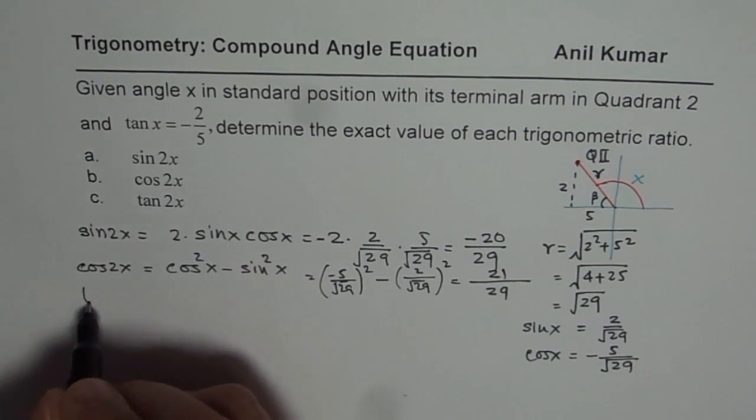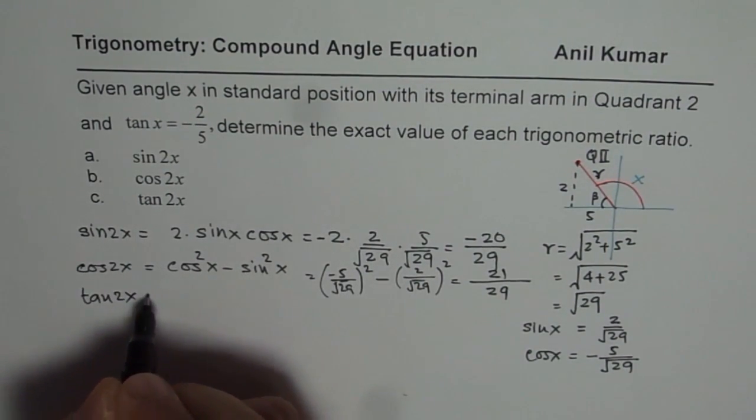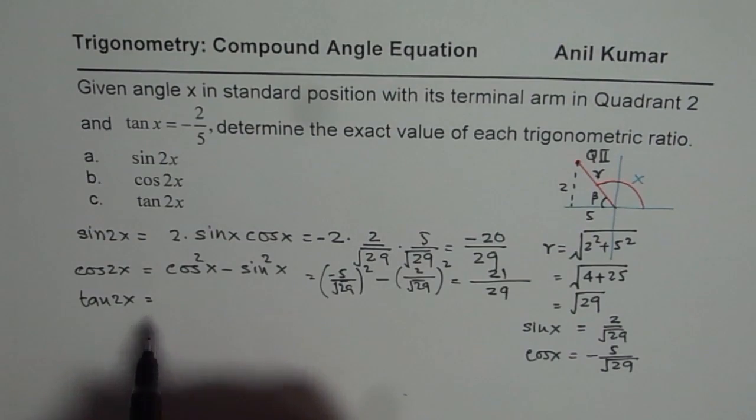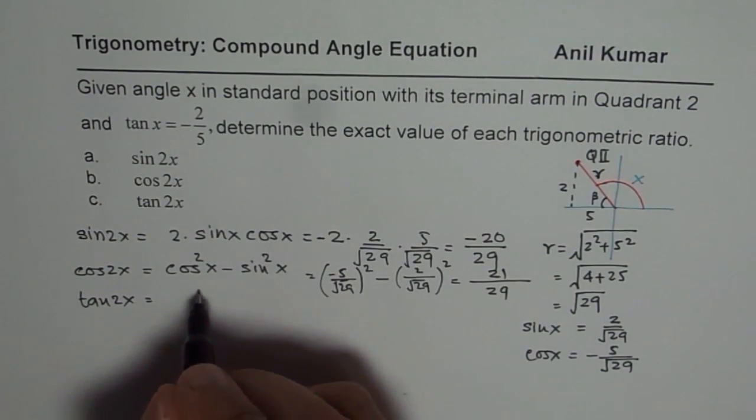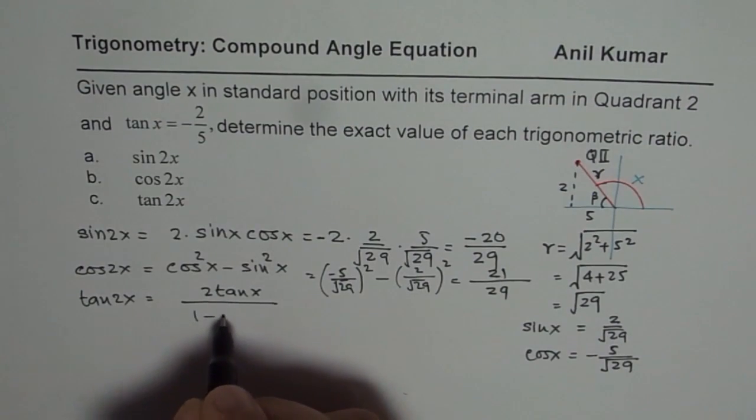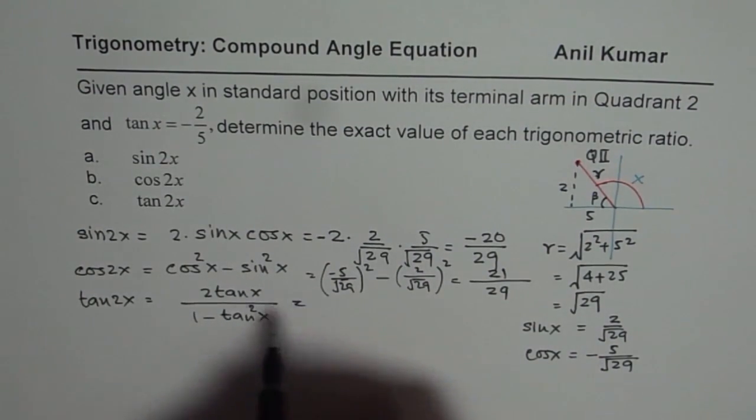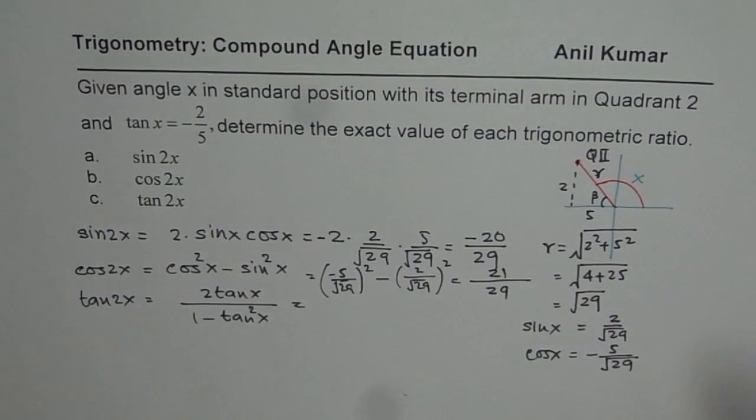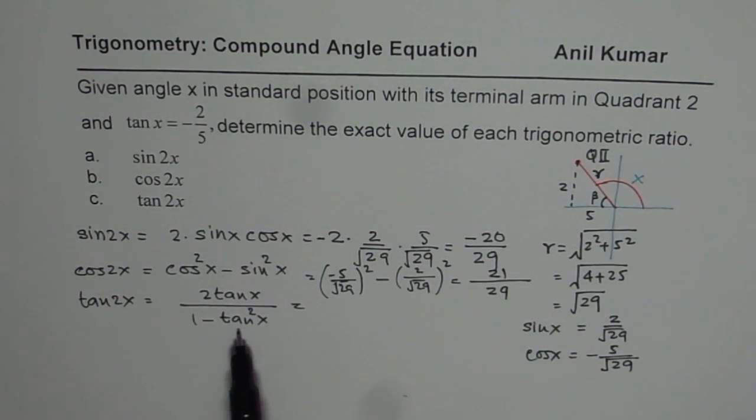As far as tan 2x is concerned, you can use the formula of tan 2x, which is 2 tan x over 1 minus tan squared x. Now you can substitute these values directly here and calculate your answer. I'll leave that for you to do. Substitute these values, tan x is negative 2 over 5 and tan squared x will be the square of this number and then solve. I hope that helps. Thank you and all the best.